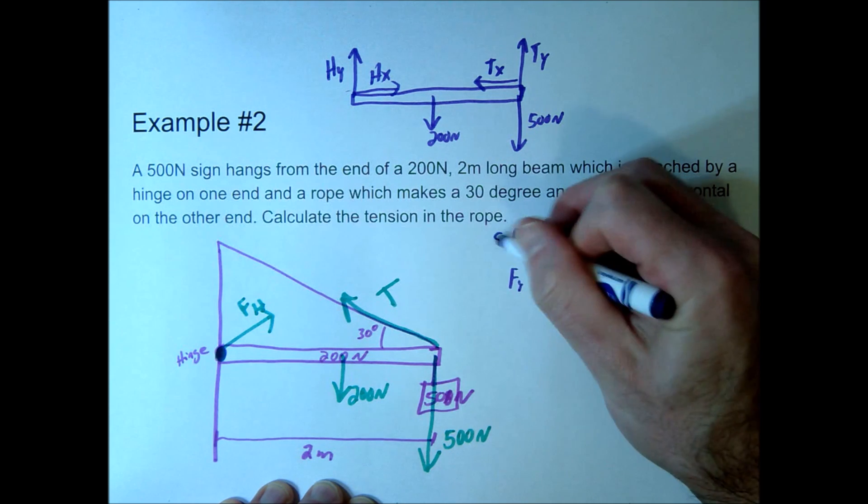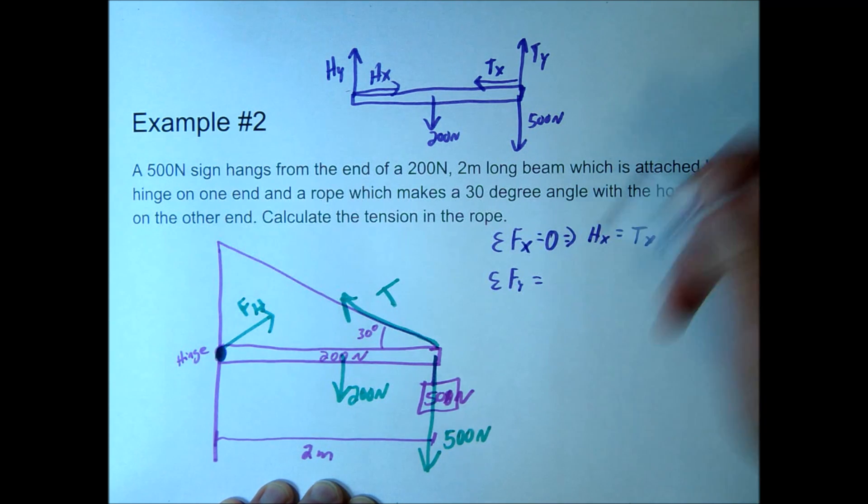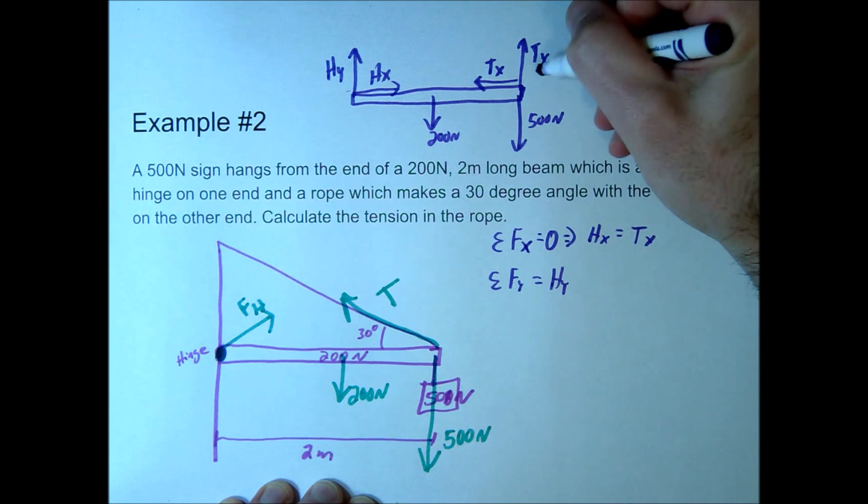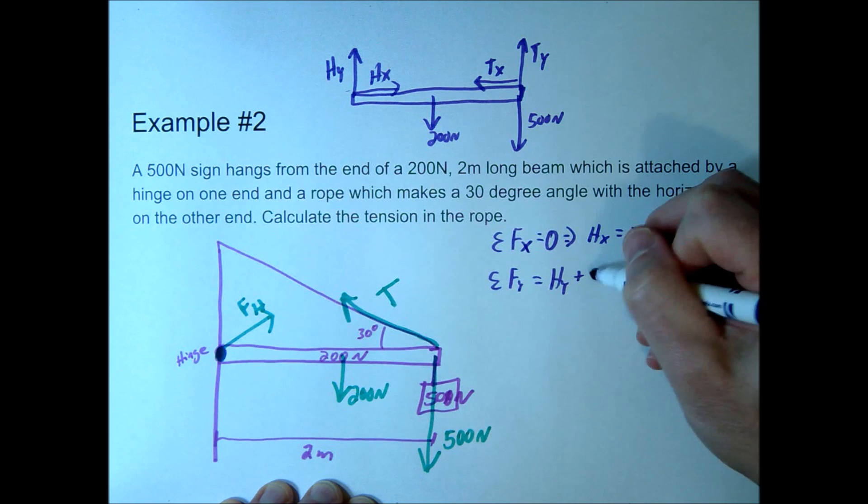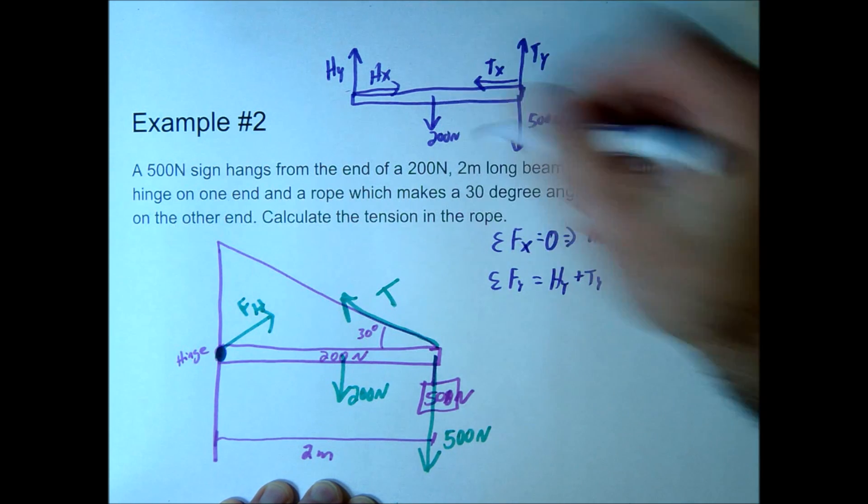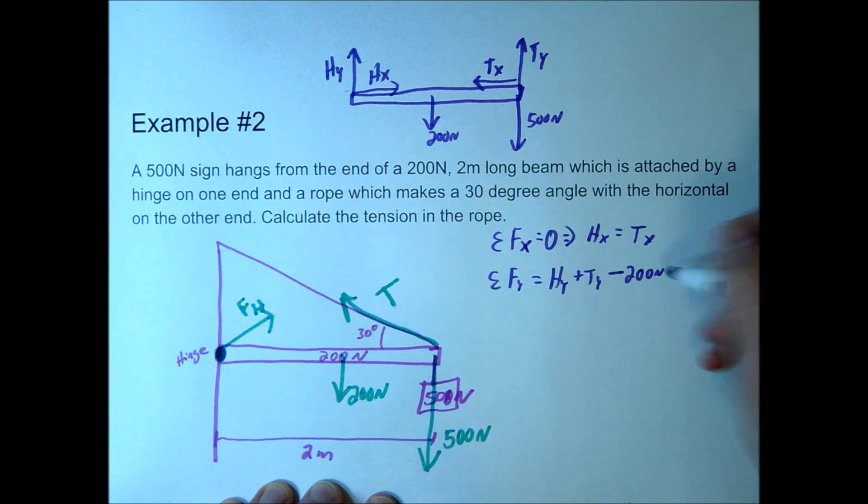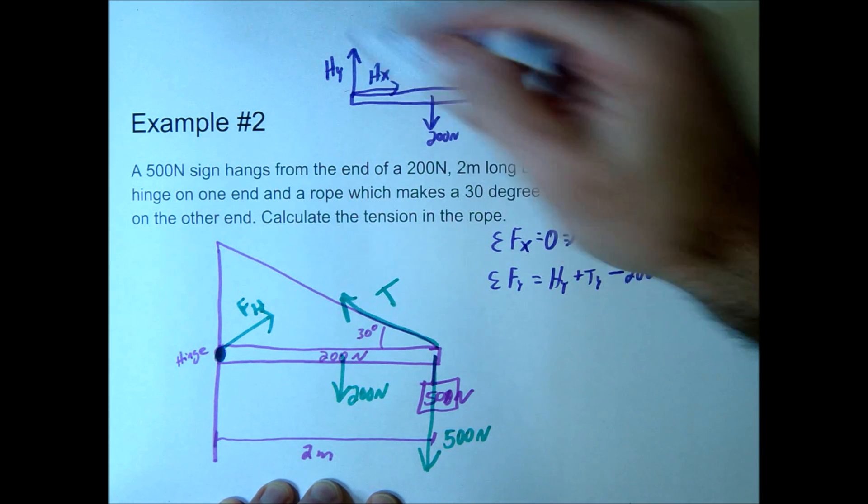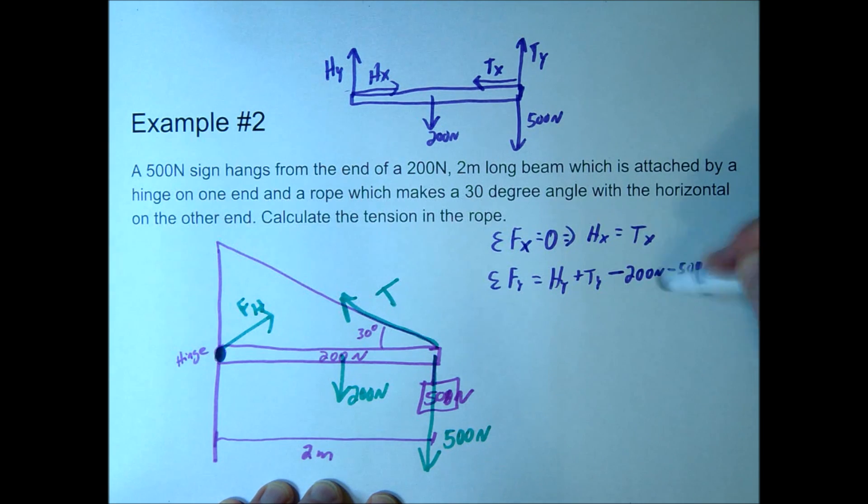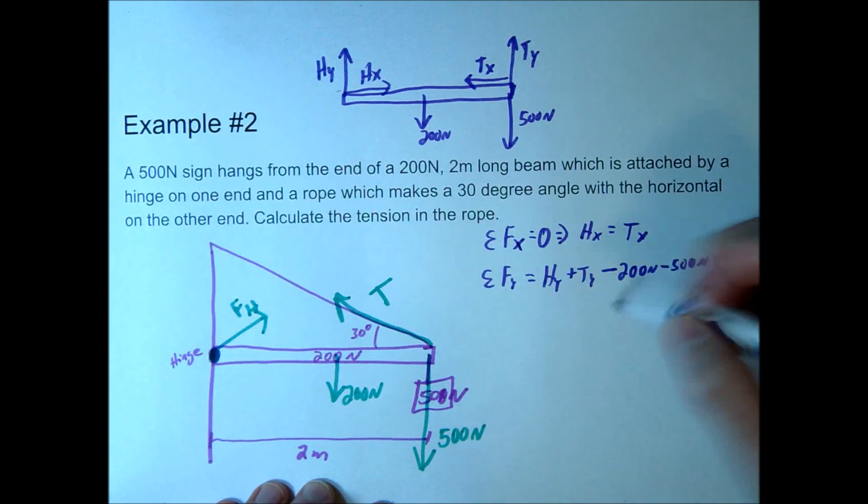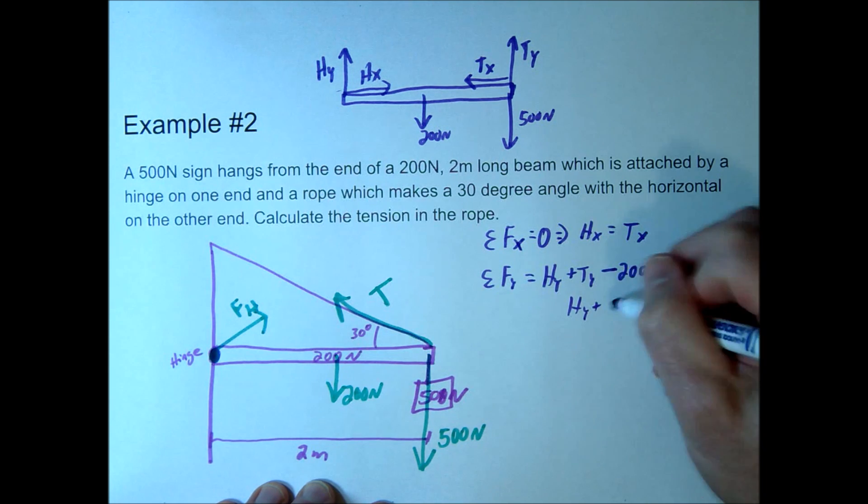Alright, when we sum up our f's in the y direction, this one now we have our hy going up, we have our ty also going up, we have our 200 going down, and we have our 500 going down, and that's going to have to equal 0. So notice the sum of these two have to balance out the 700 going downwards. So write that: hy plus ty should equal 700 newtons.